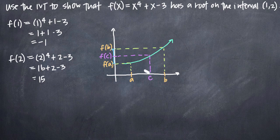So if we apply this to our problem, what we see is that we have the points here, 1 and 2, and we now know that f(a) is negative 1 and f(b) is 15.